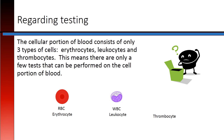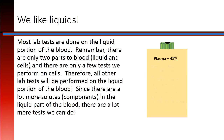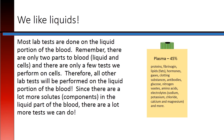The cellular portion of blood consists of only three types of cells: erythrocytes, leukocytes, and thrombocytes. This means that there are only a few tests that can be performed on the cell portion of the blood. Most lab tests are done on the liquid portion. Since there are a lot more solutes or components in the liquid portion, there are a lot more tests we can do.